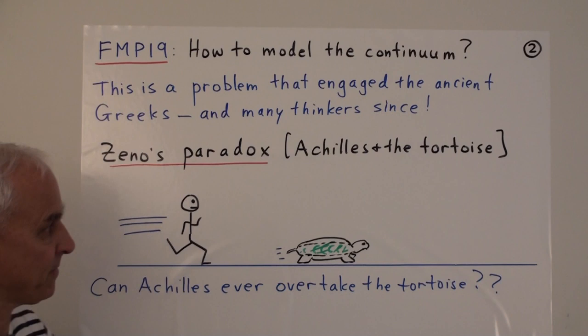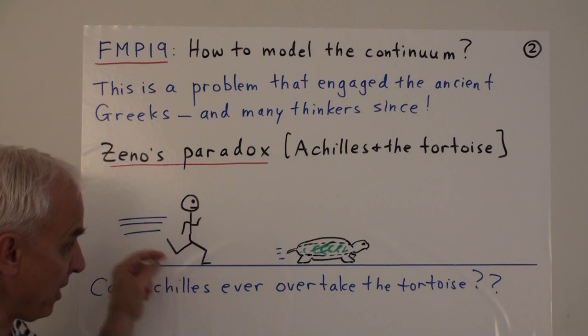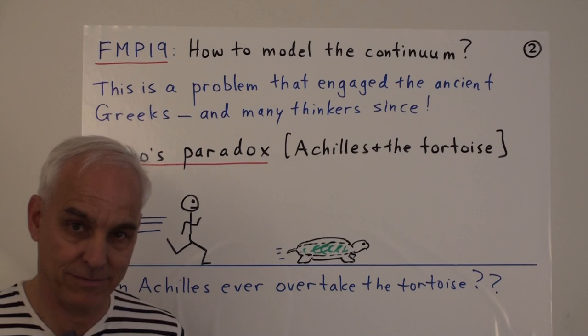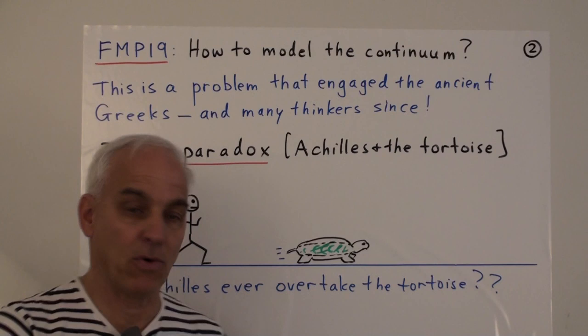So one of Zeno's paradoxes, often called Achilles and Tortoise, features Achilles and Tortoise. And they are having a race, both going in this direction here. And the Tortoise is in front and goes rather slowly and steadily, and Achilles is behind, but he's a fast runner. So we would, of course, imagine that in a position like this, if we looked at it some short time afterwards, the tortoise would have moved up a little bit, but Achilles would have gone past the tortoise and would be way out in front of it.